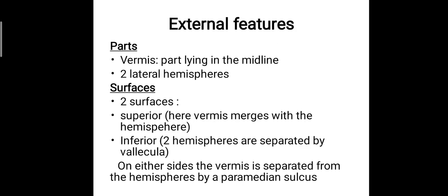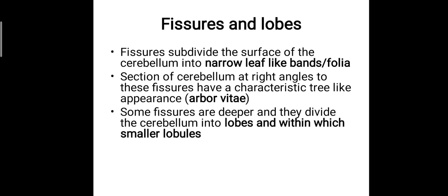The external features of cerebellum: it is divided into two parts — the vermis and two lateral hemispheres. The surfaces of the cerebellum include the superior surface and inferior surface. On either side, the vermis is separated from the hemispheres by a paramedian sulcus — a sulcus which separates the vermis from the lateral hemispheres.